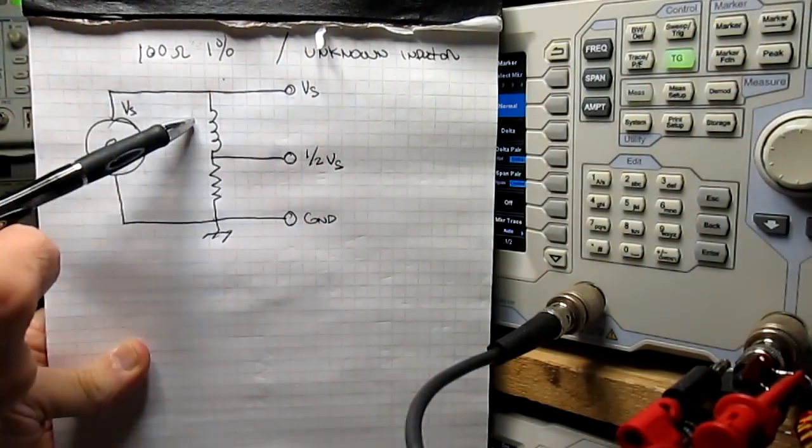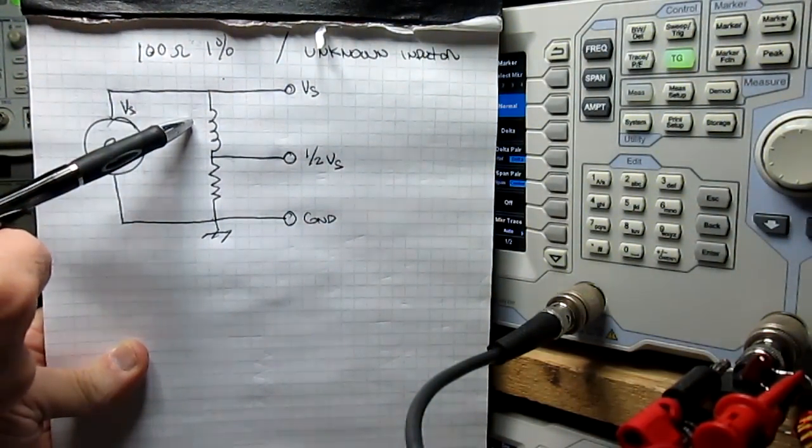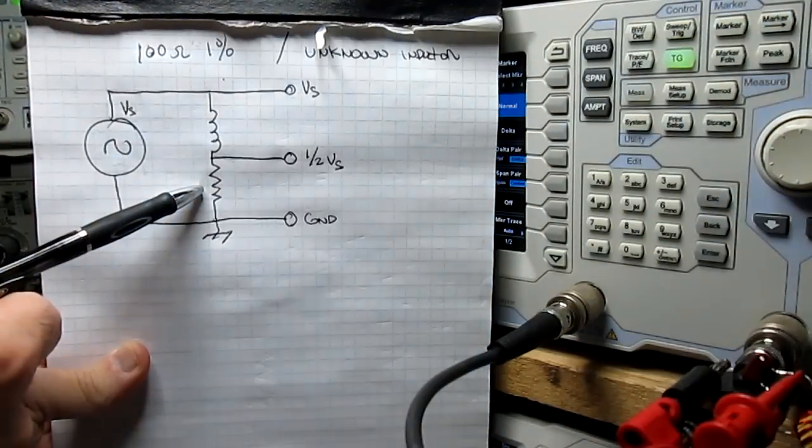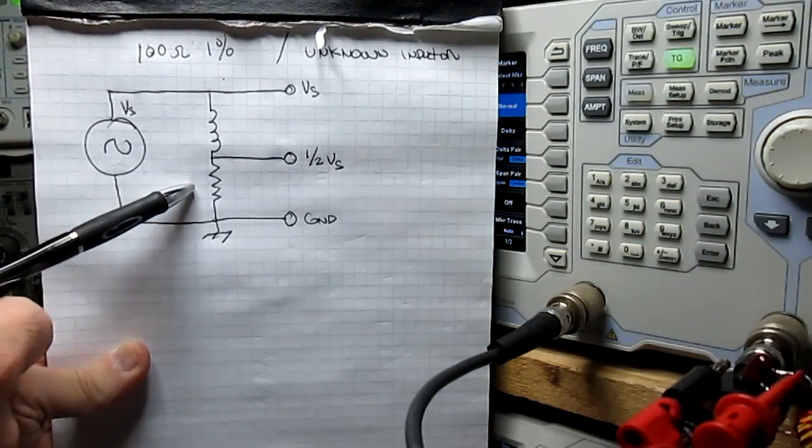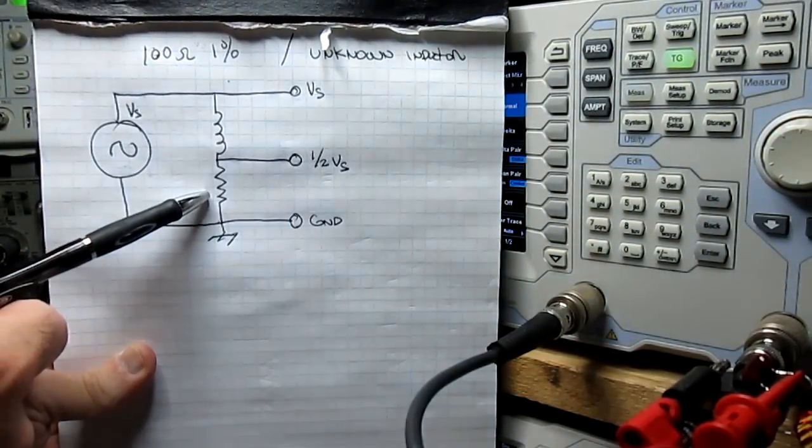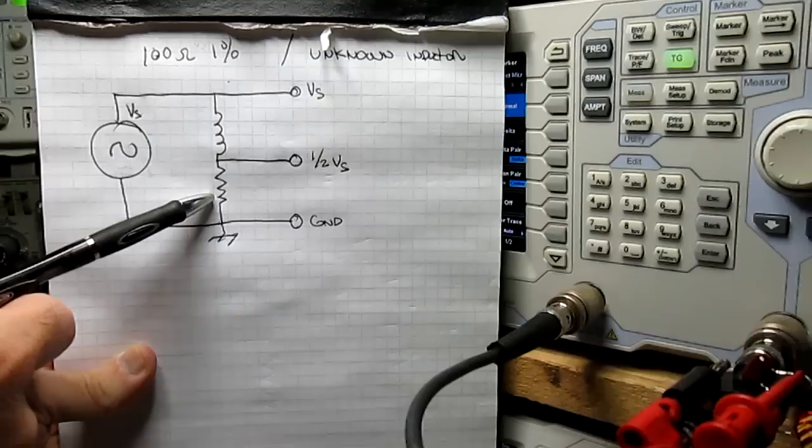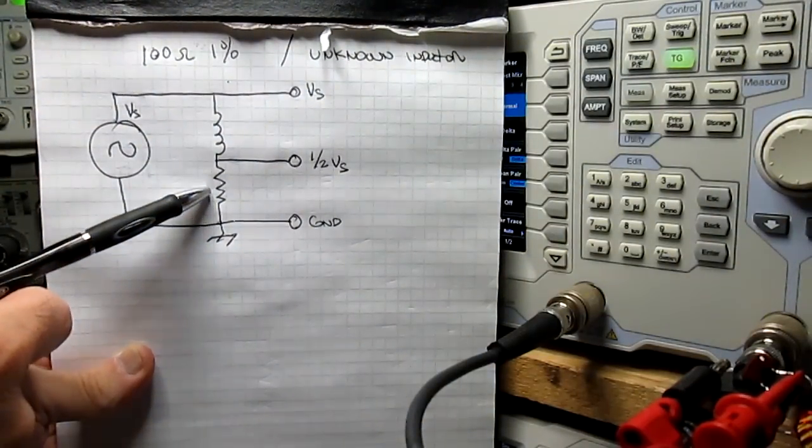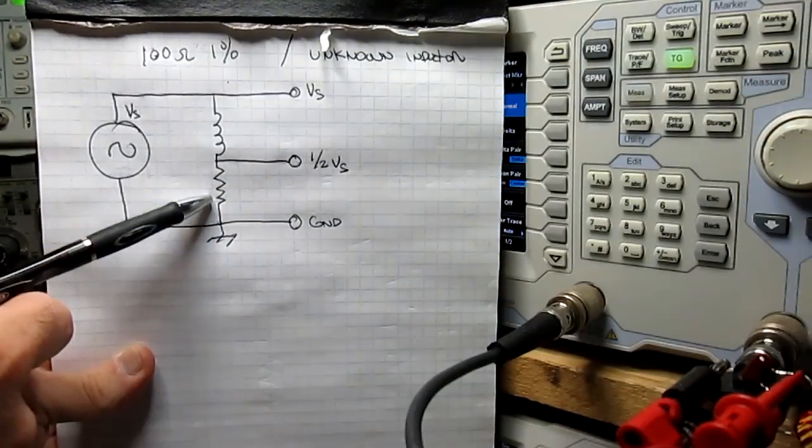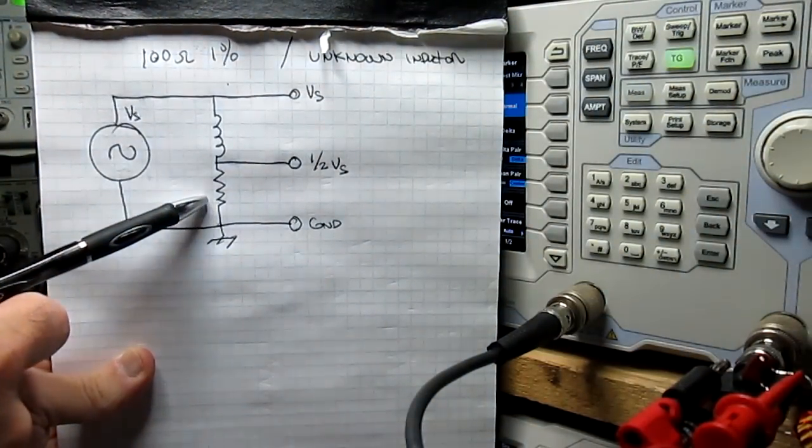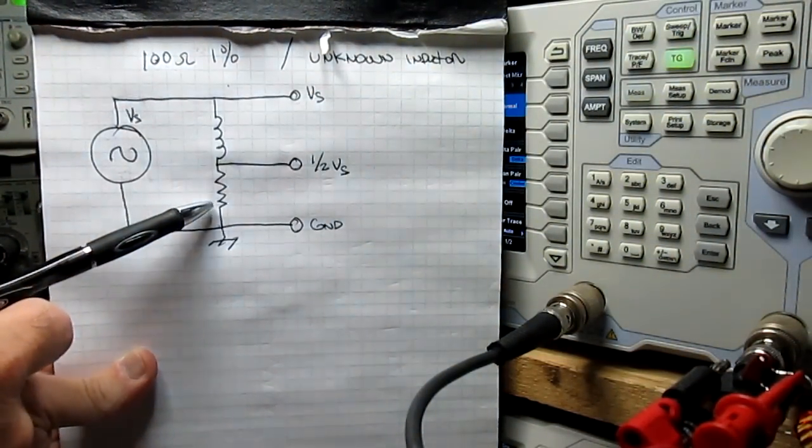So you get your source here VS, your inductor here that you don't know the value for, and a 100 ohm resistor. With the calculator they have on their site, you can put in any value you want, but I noticed the higher this resistor goes, the higher the frequency you need to do this.